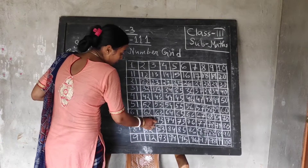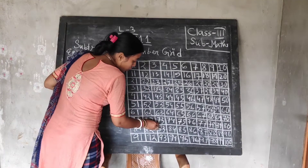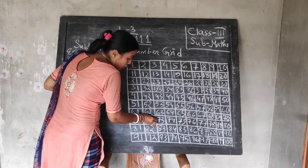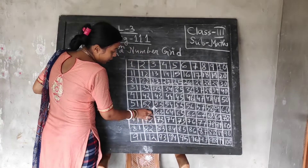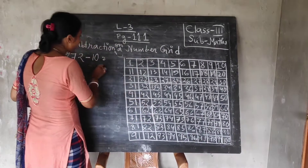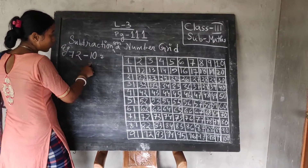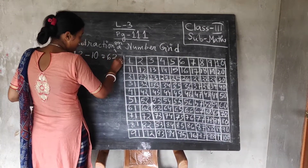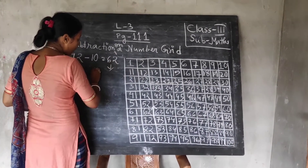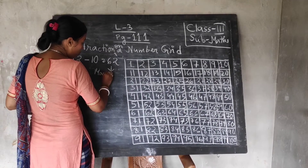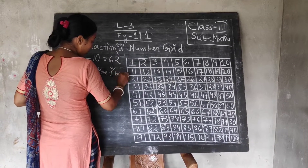Now, 72 minus 10 — what we have to do? We have to move one box up. By moving one box up, we can get our answer. 72 minus 10 is 62. We have moved one box up.